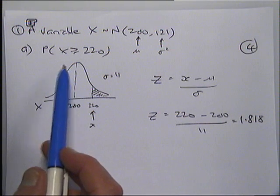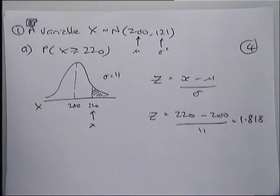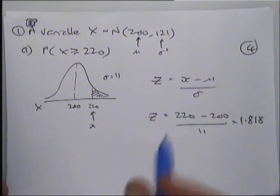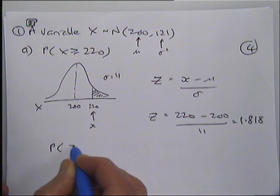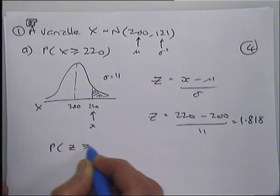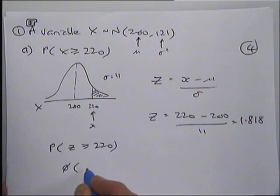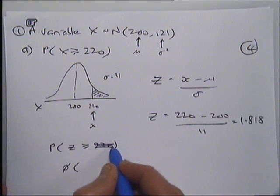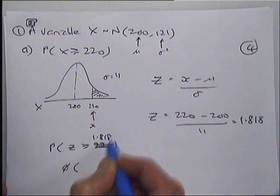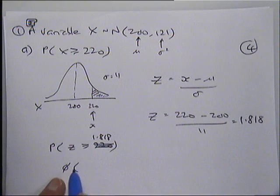The tables are on page 172 of the textbook and page 19 of the formula book. The tables are less than tables. In this question we want the probability that Z is greater than or equal to 1.818.